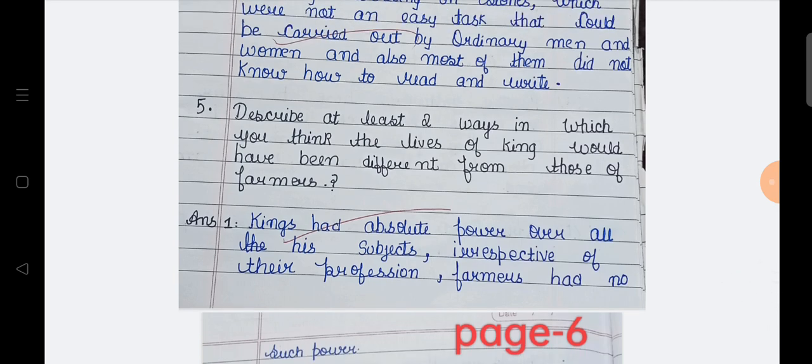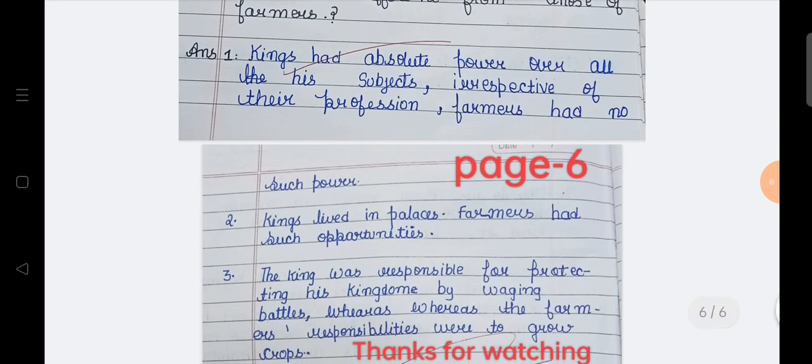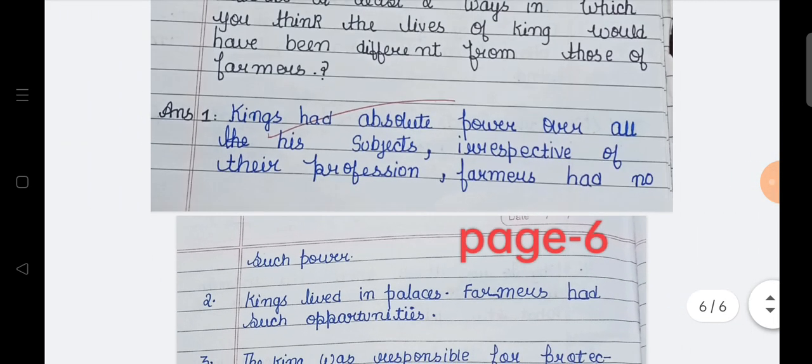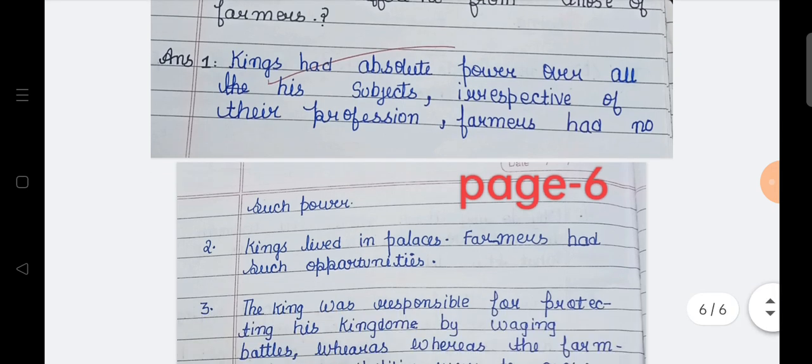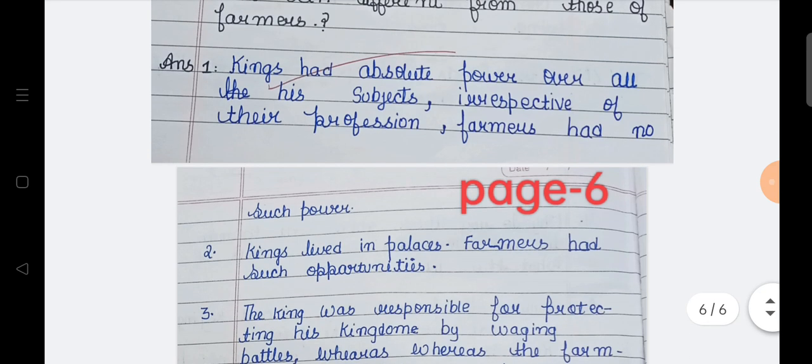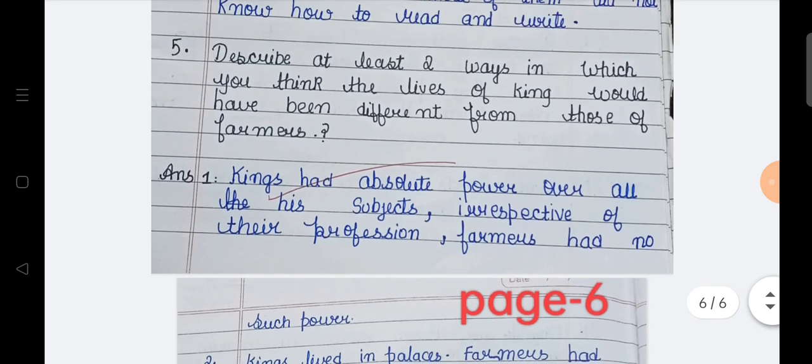Fifth question is, describe at least two ways in which you think the lives of kings would have been different from those of farmers. Kings had absolute power over all his subjects, irrespective of their profession. Farmers had no such power. They have not any subscribers. Means nobody supporting them. But kings have many subscribers and he is followed by many people.